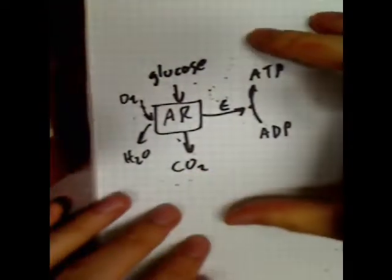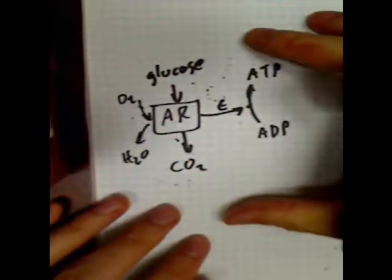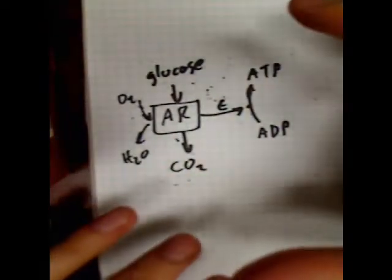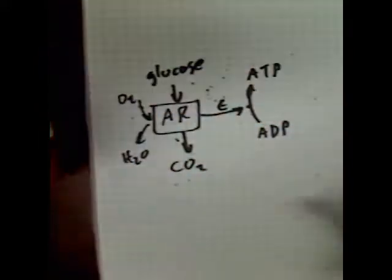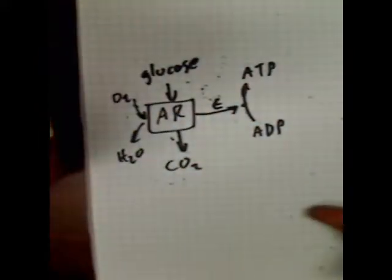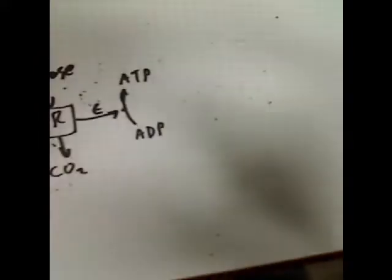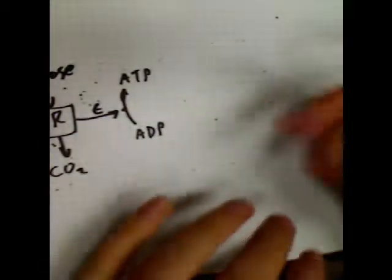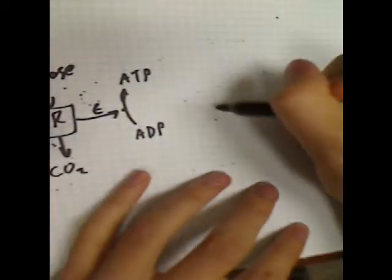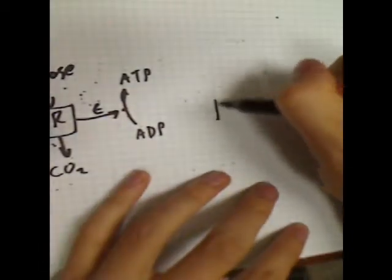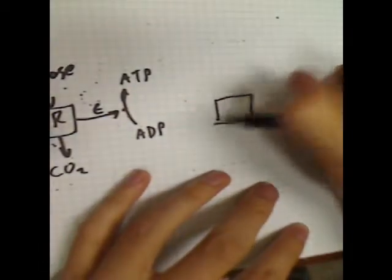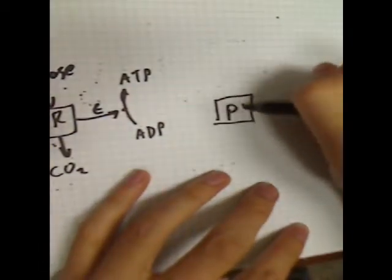This diagram should be thought of as an unbalanced chemical equation since the numbers aren't included. Photosynthesis is the opposite of respiration — everything that goes into respiration is what comes out of photosynthesis.